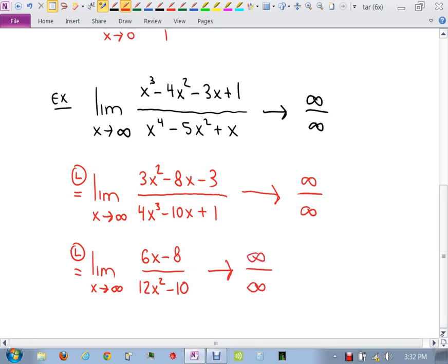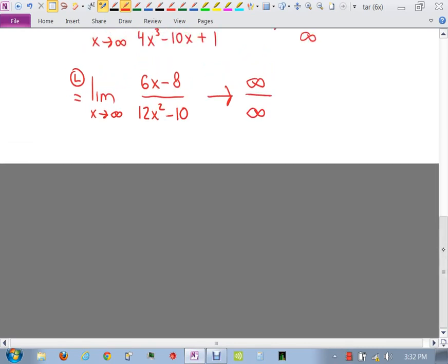Does everyone have that written down? I've got to move to a new page here. Everyone got that? So I was at limit, so here comes L'Hôpital. So it's going to be limit as x goes to infinity. What was it? 6 now over what? 24x? Is that it? Yeah? Do you all agree? Now what do we have?